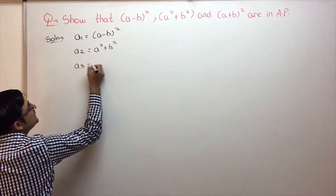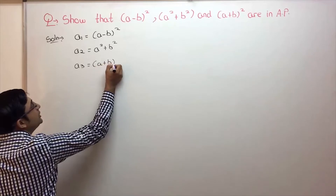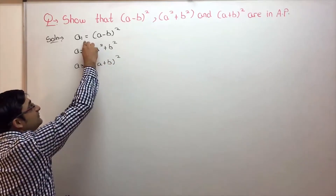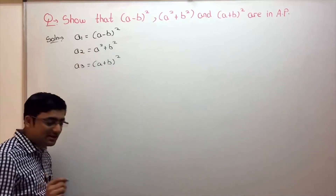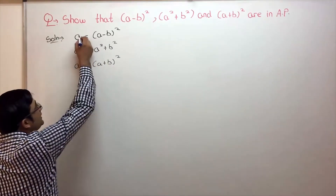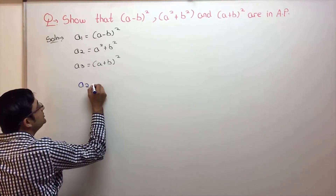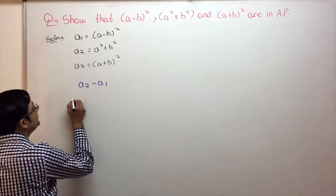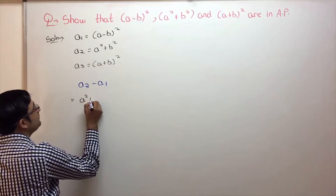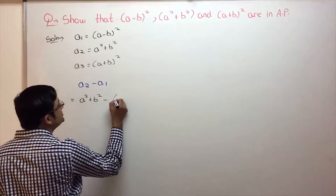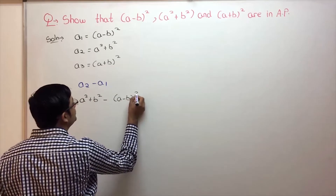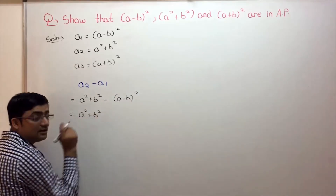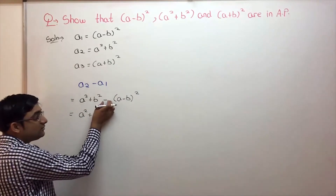And the third term as (a + b)². To show these three terms are in AP, we have to find the difference between the second and first term, and the third and second term, and show them to be the same. First, I'll find a2 minus a1: that is (a² + b²) minus (a - b)².